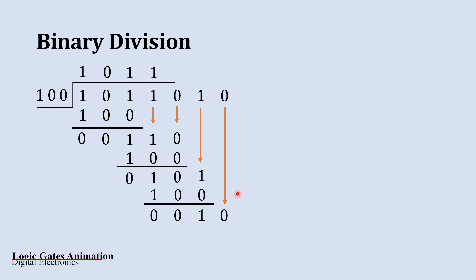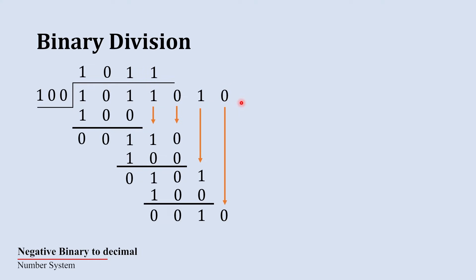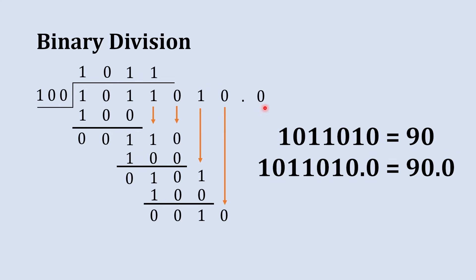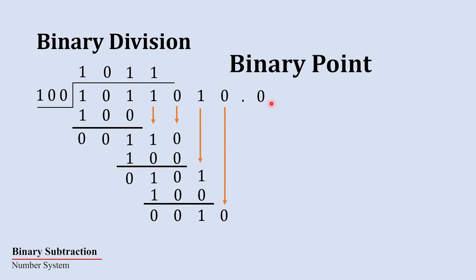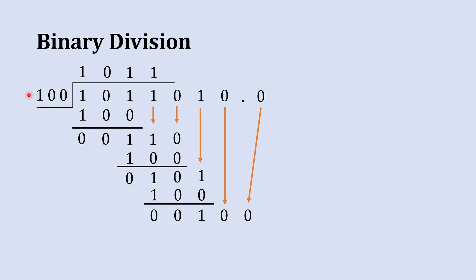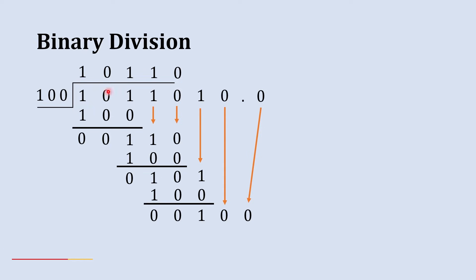We would normally stop here, taking this as our quotient and this as our remainder. But if we want to continue with no remainder, we take a binary point and add a 0 after it. Adding zeros after a binary point does not change the magnitude of the number. Bring this 0 down — now we have 100. Is 100 equal to or greater than divisor 100? Yes.